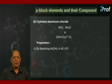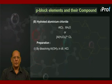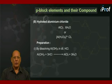Number one, by dissolving aluminum hydroxide in dilute HCl. So the reaction is Al(OH)3 + 3HCl giving AlCl3 + 3H2O.